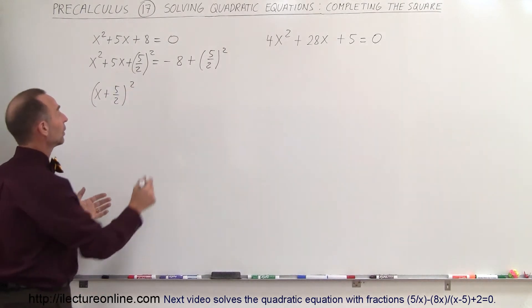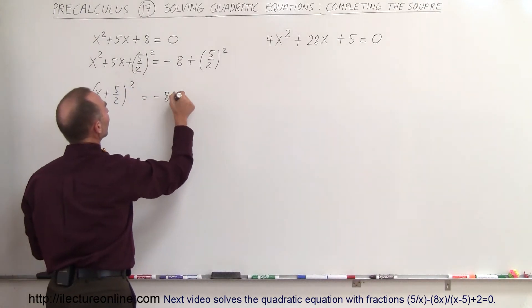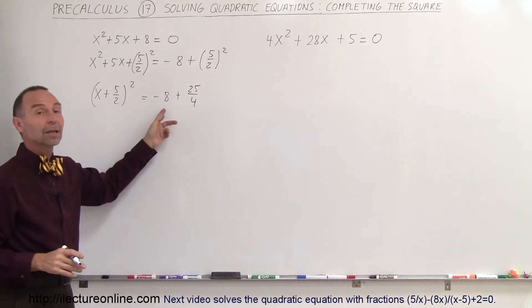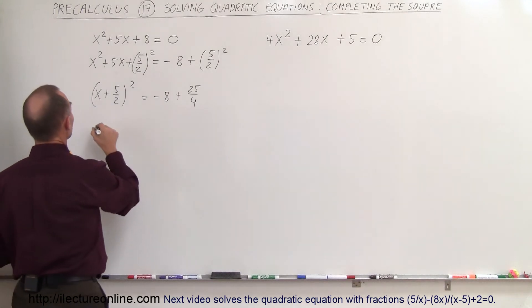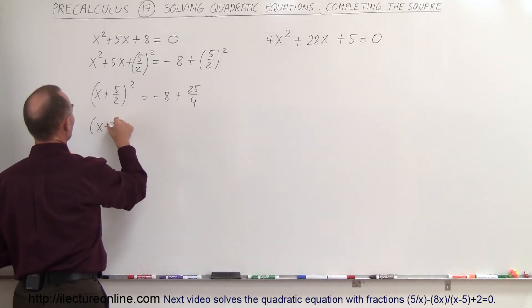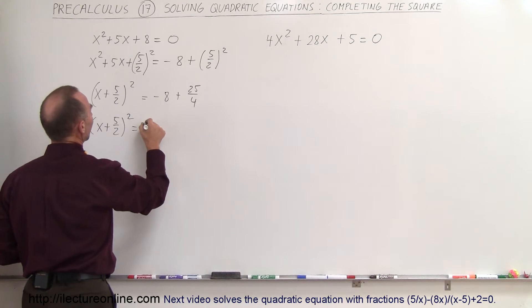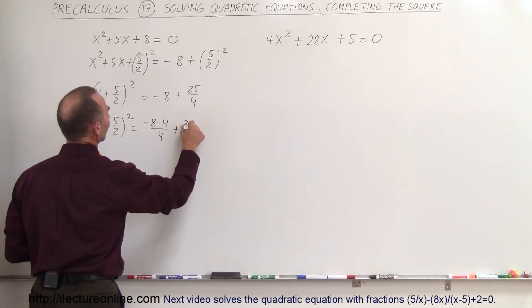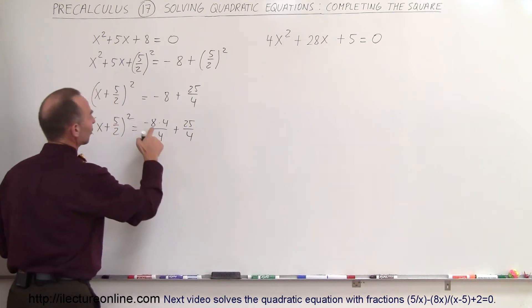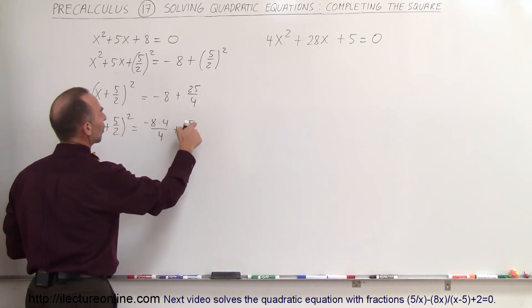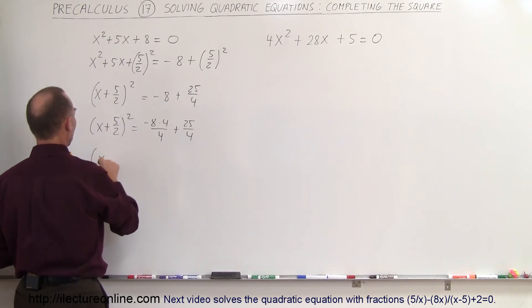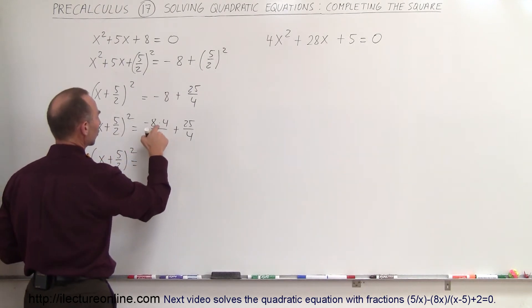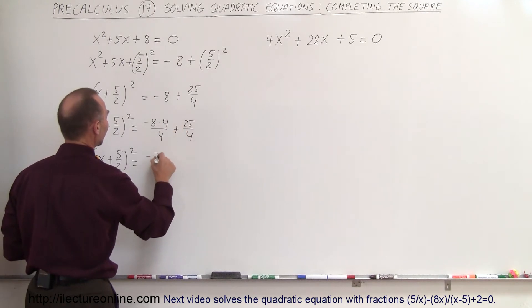This can be written as (x + 5/2)². On the right side we have -8 + 25/4. To combine this we find the common denominator, which is 4. So this becomes (x + 5/2)² = -8×(4/4) + 25/4, which is -32 + 25 = -7. So we have (x + 5/2)² = -7/4.